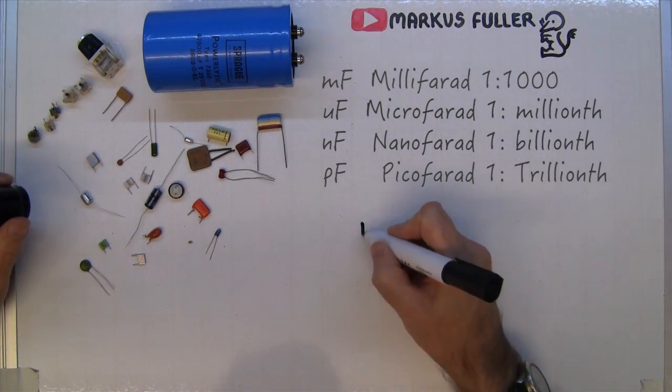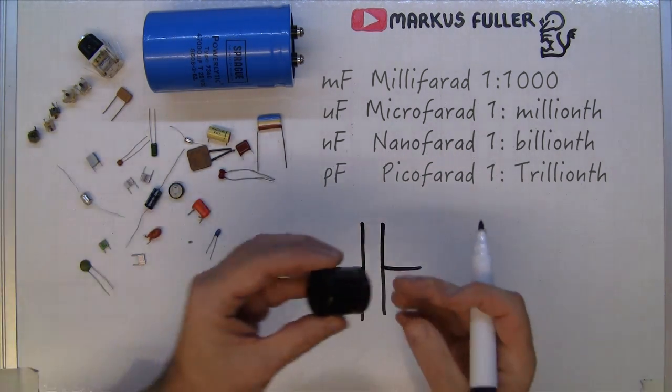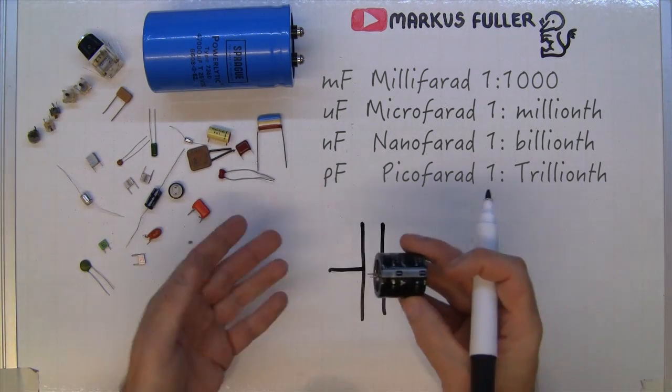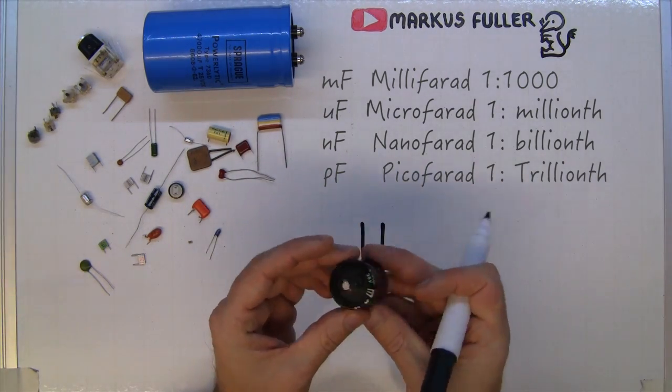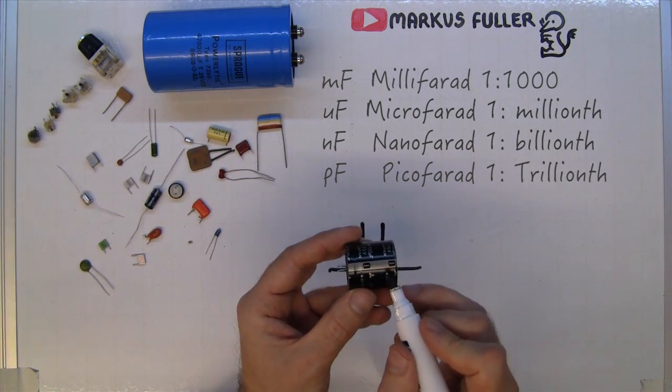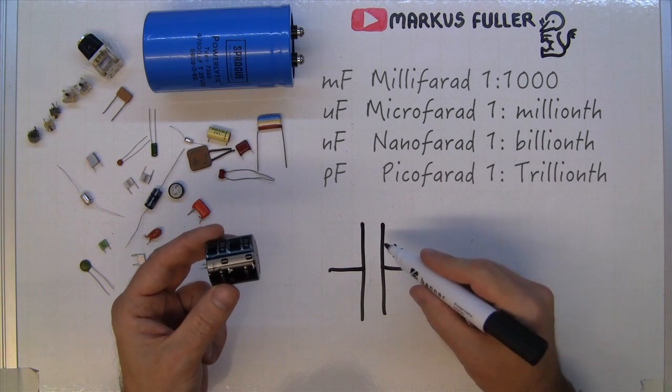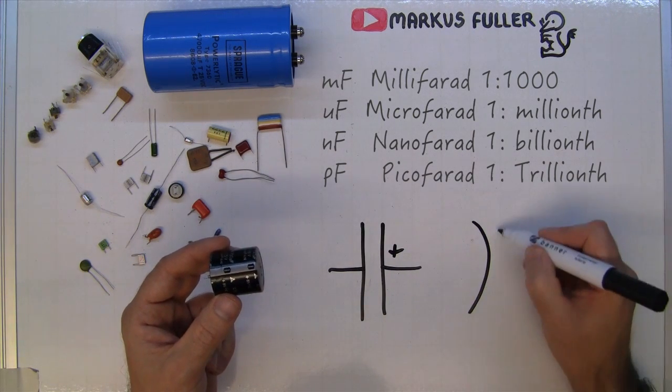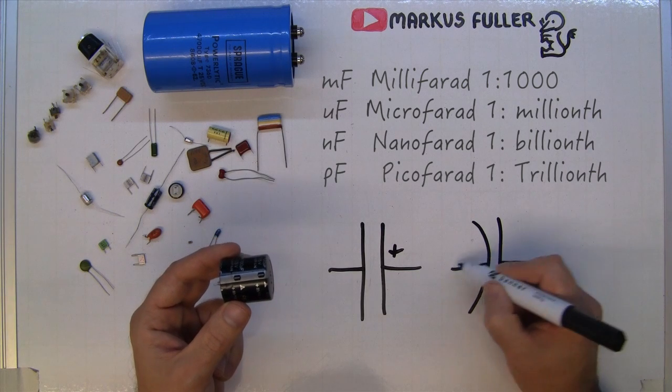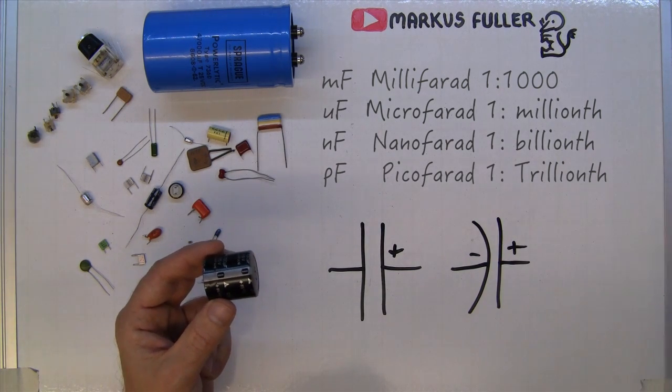The symbol for capacitor is basically two plates because that really is what is inside these things. If you have a polarised capacitor you'll have a negative symbol down one side, or you may have a bend which denotes the negative and the positive.